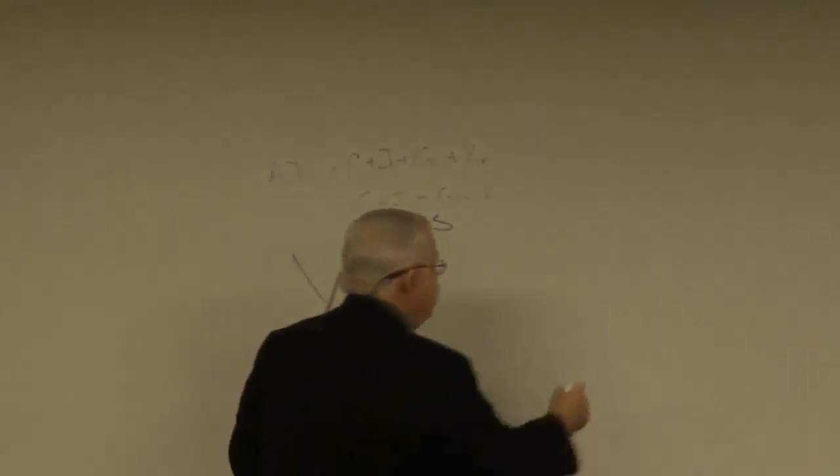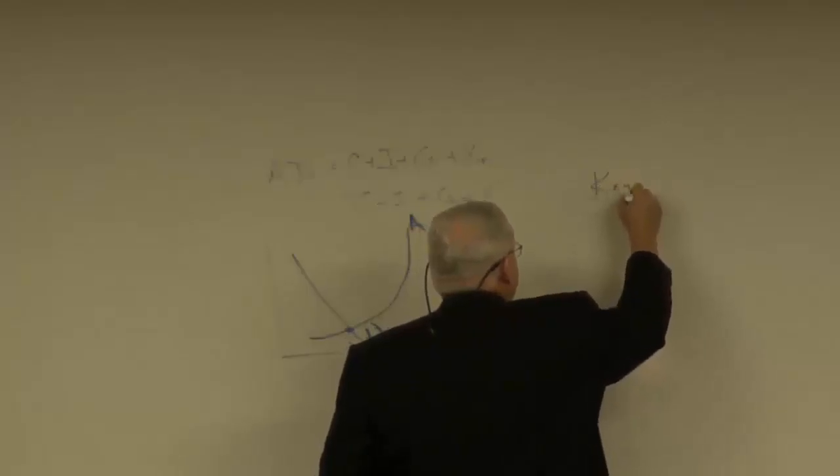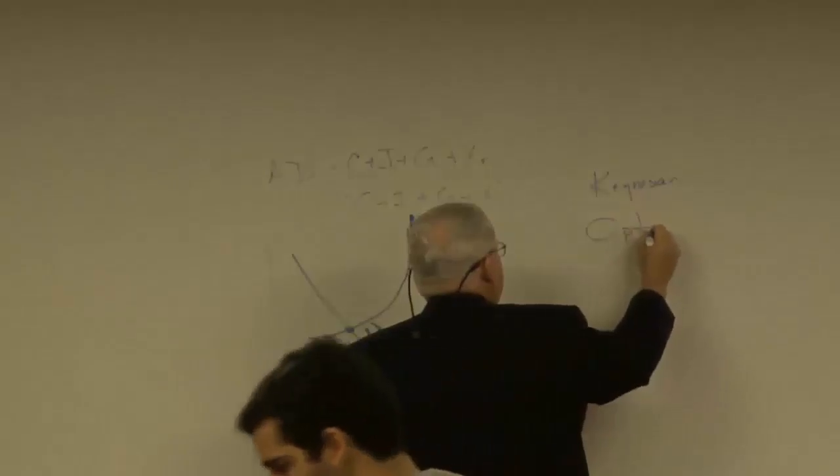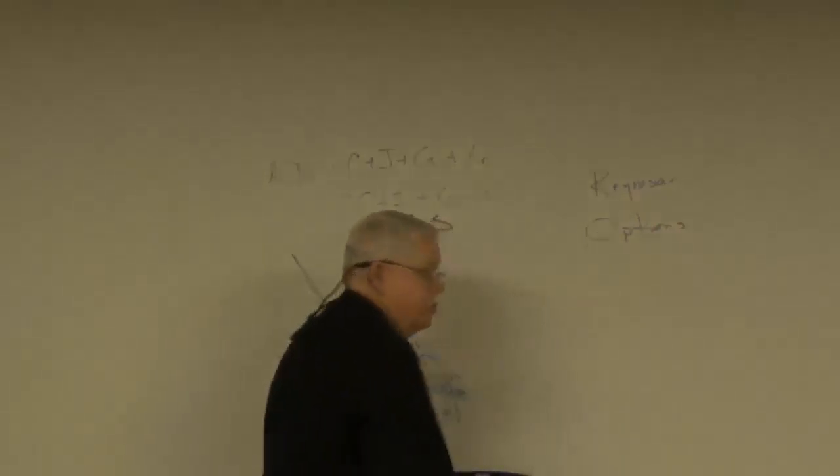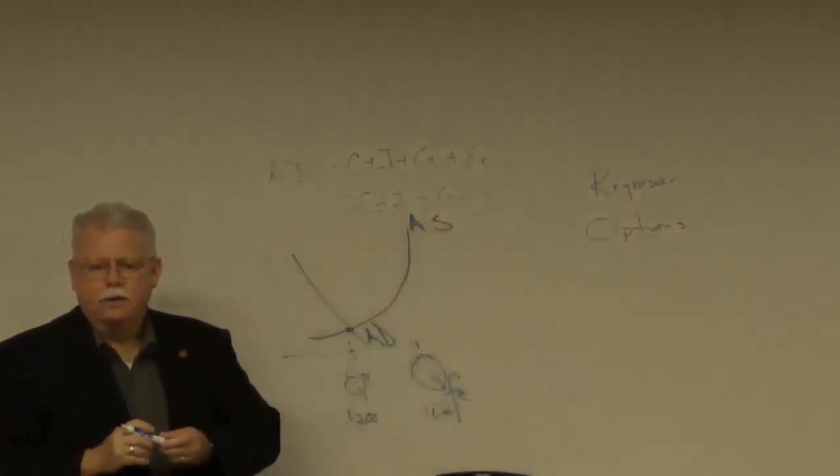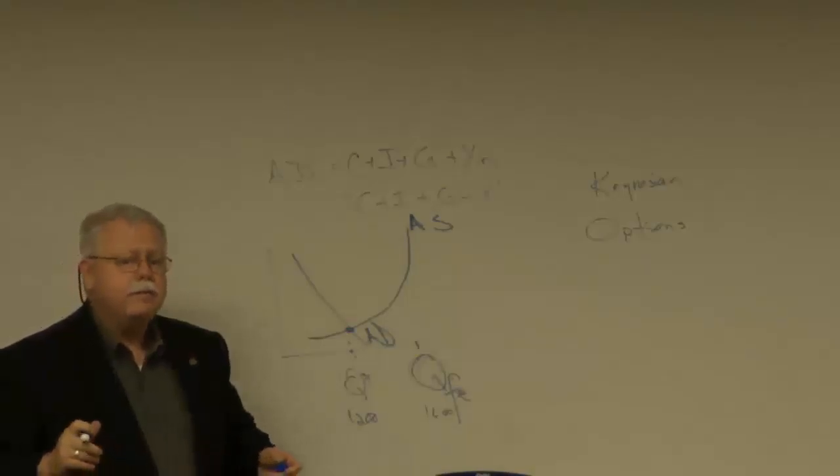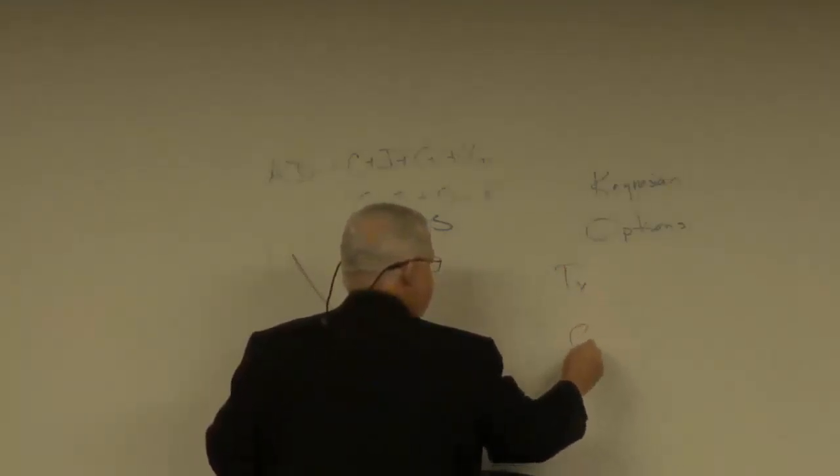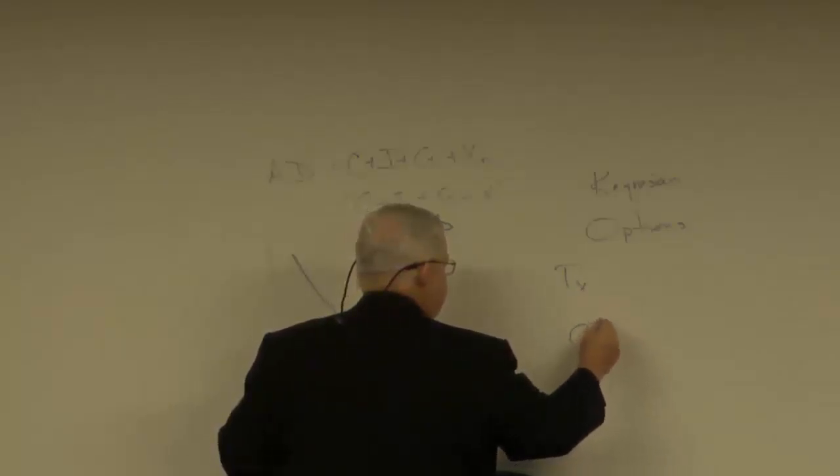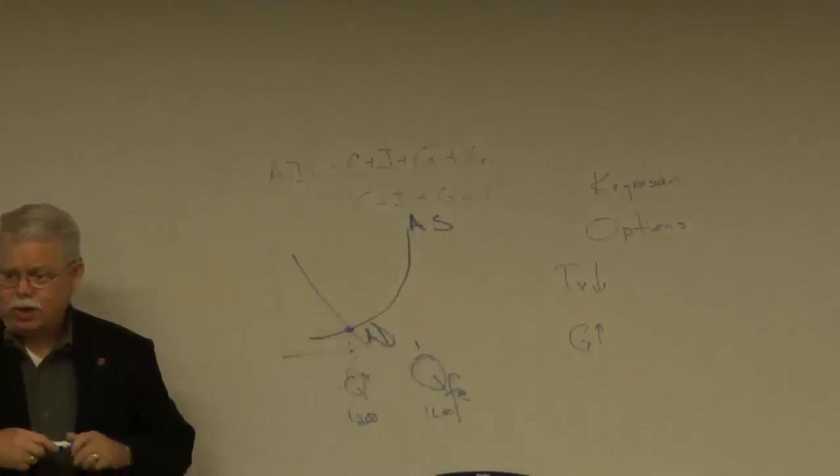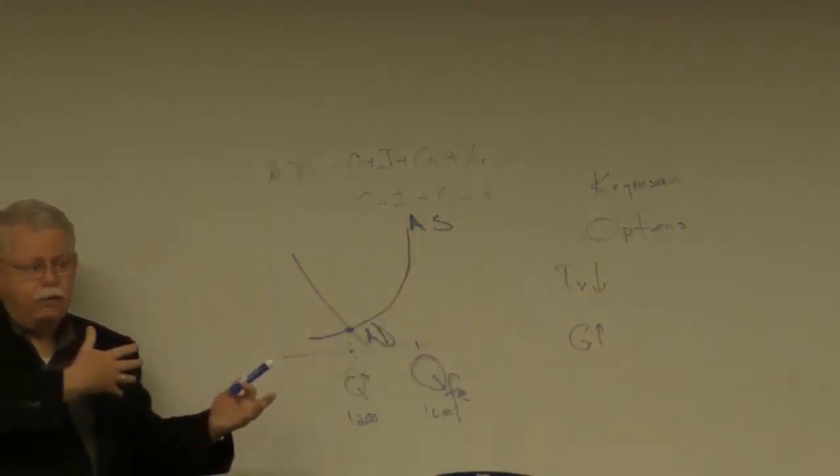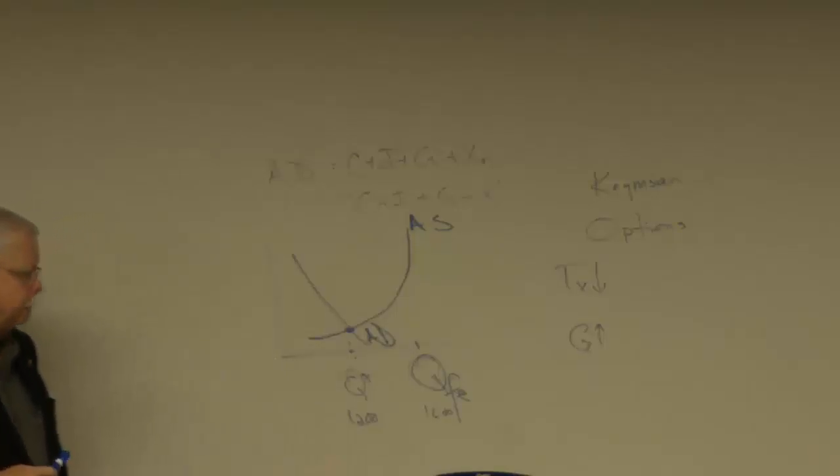What are the Keynesian fiscal policy options? How do you cure this, as far as Keynes is concerned? Say again? Lower taxes. Either lower taxes or you increase spending. Everybody remembering all that? I mean, that was what was on the last test, and it's going to be more of it. Have you seen it? Chapters 11 and 12 are going to be on this test. Okay.